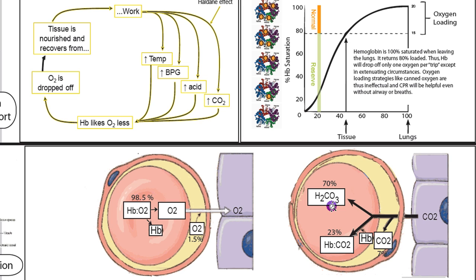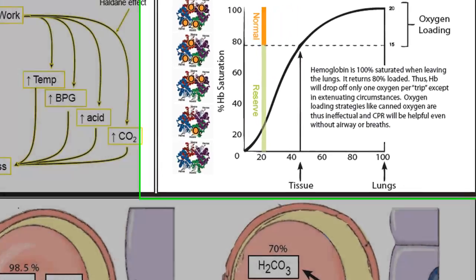So we sequester it as something called carbonic acid, which is H2CO3. This means we can carry the CO2 in the red blood cell back to the lungs, and it's not going to kick the oxygen off the hemoglobin.